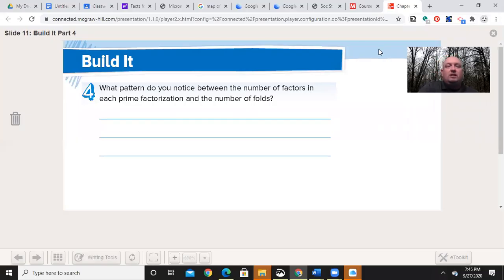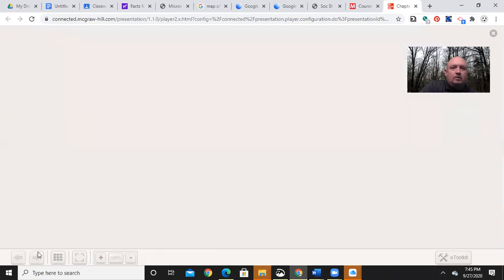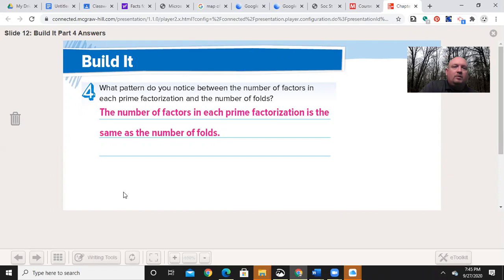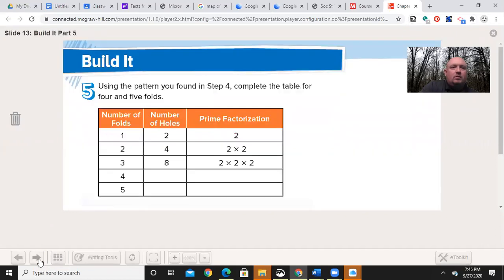So what pattern do you see with our numbers? Well, we noticed that with each fold, we went from two to four to eight. It was doubling. We were multiplying the previous factors by two. We went from two to two times two to two times two times two. And we would keep on going with that. So the number of factors in each prime factorization is the same as the number of folds. Three folds, three factors in this case.